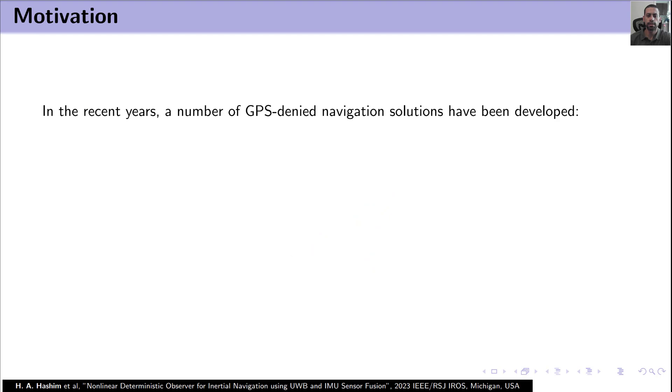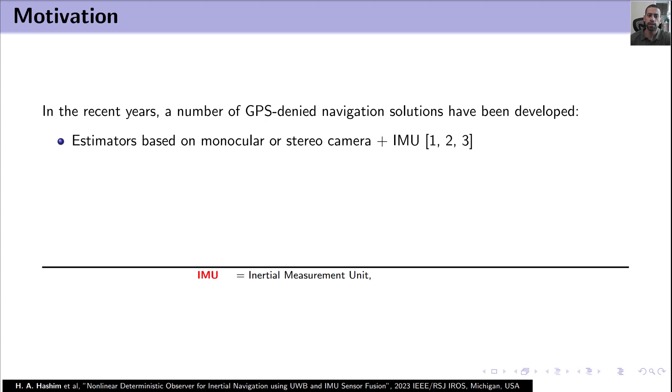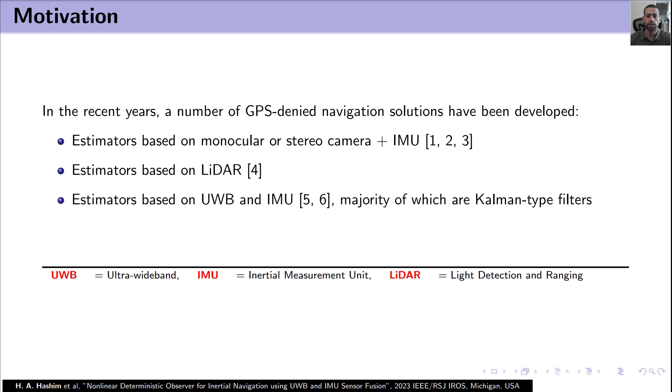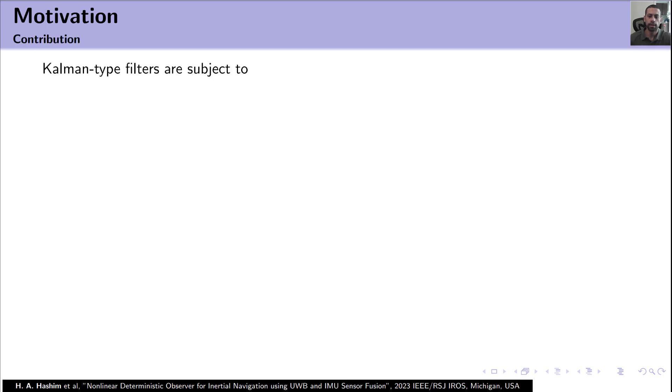Over the last years, several GPS denied navigation solutions have been proposed such that we have estimators based on the fusion of stereo camera or monocular camera plus IMU. We have estimators based on LiDAR. We have estimators based on fusion of UWB and IMU. The majority of the solutions that rely on the fusion of UWB and IMU are Kalman type filters. Kalman type filters are subject to consistency issues. Also, they fail to capture the model nonlinearity.